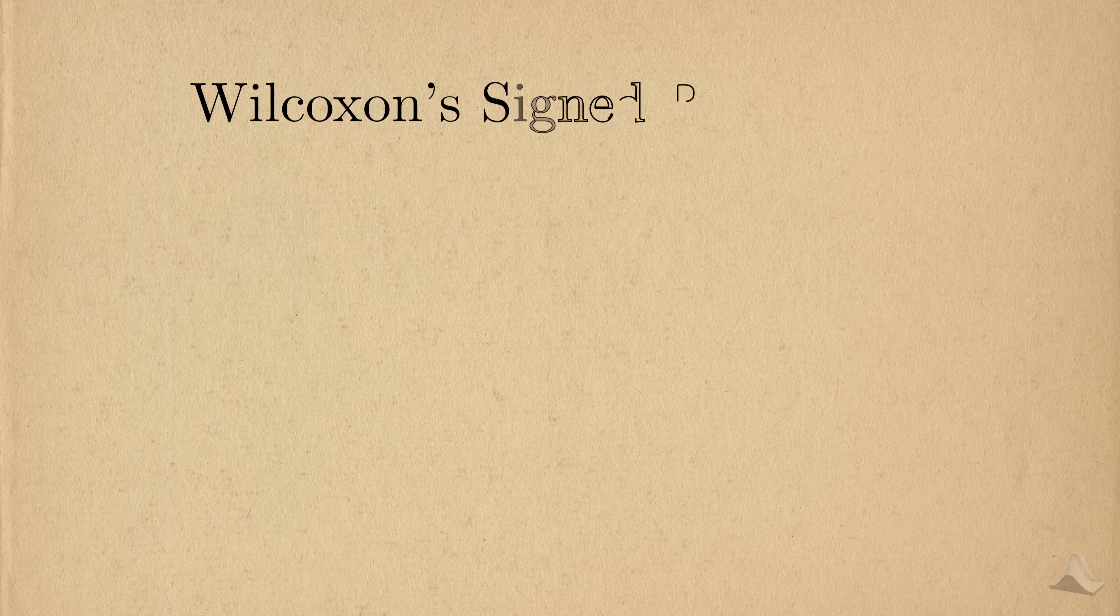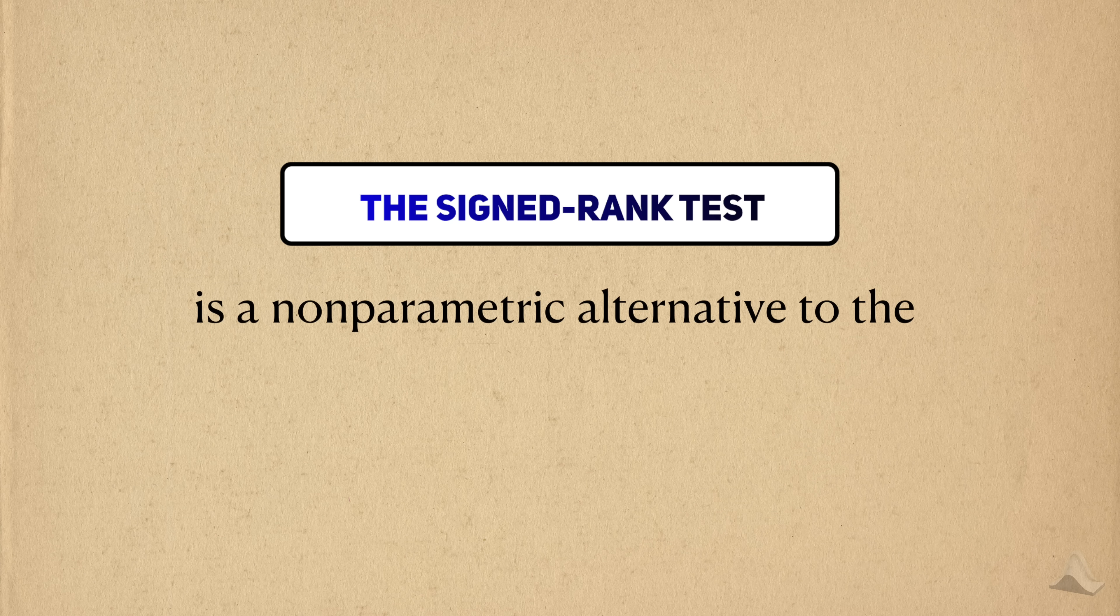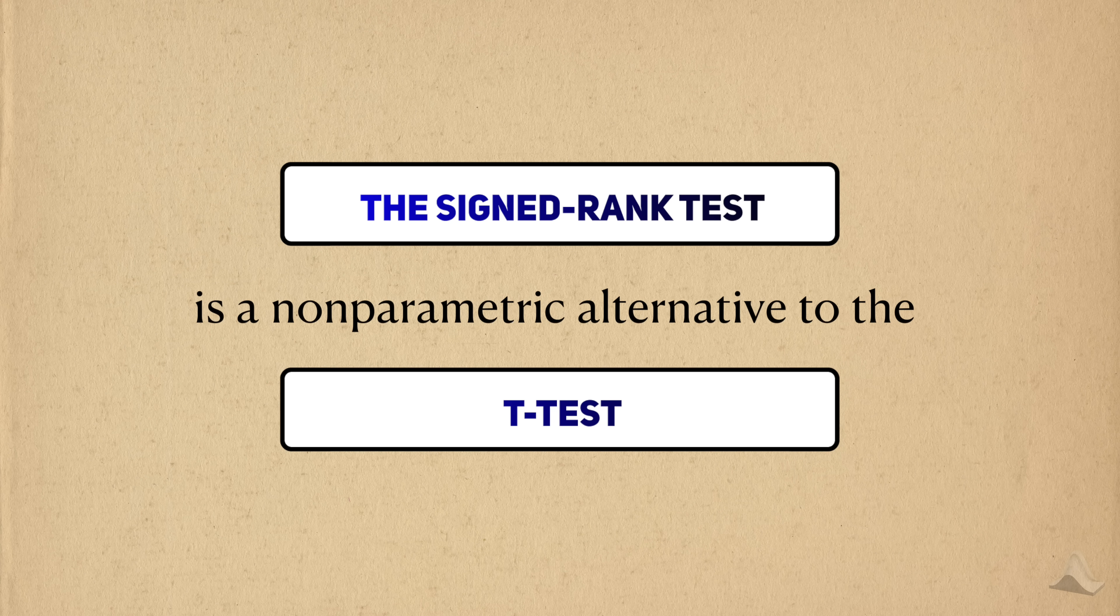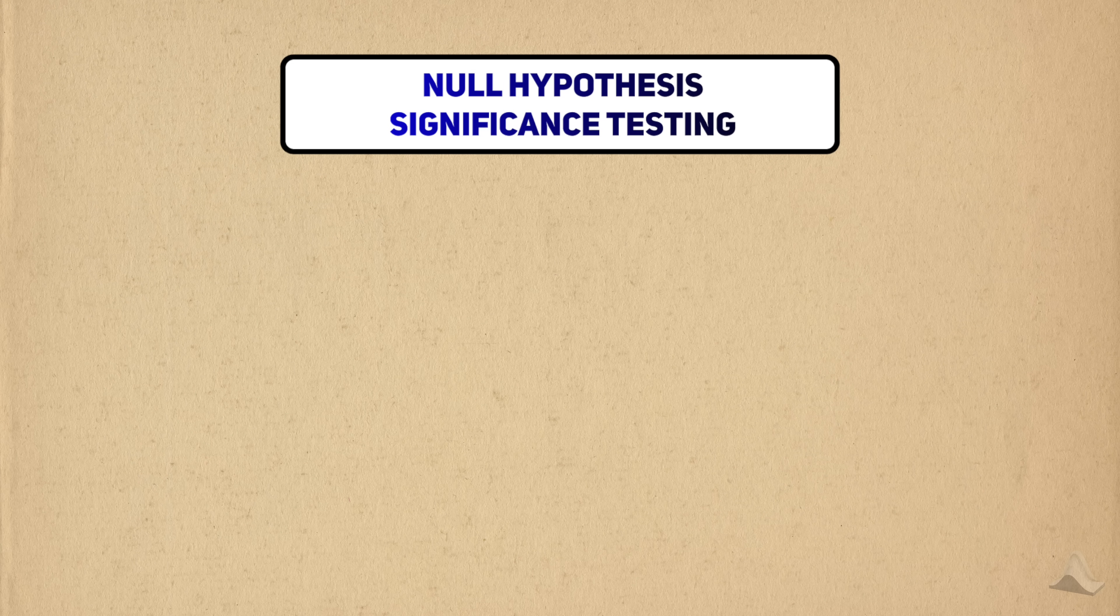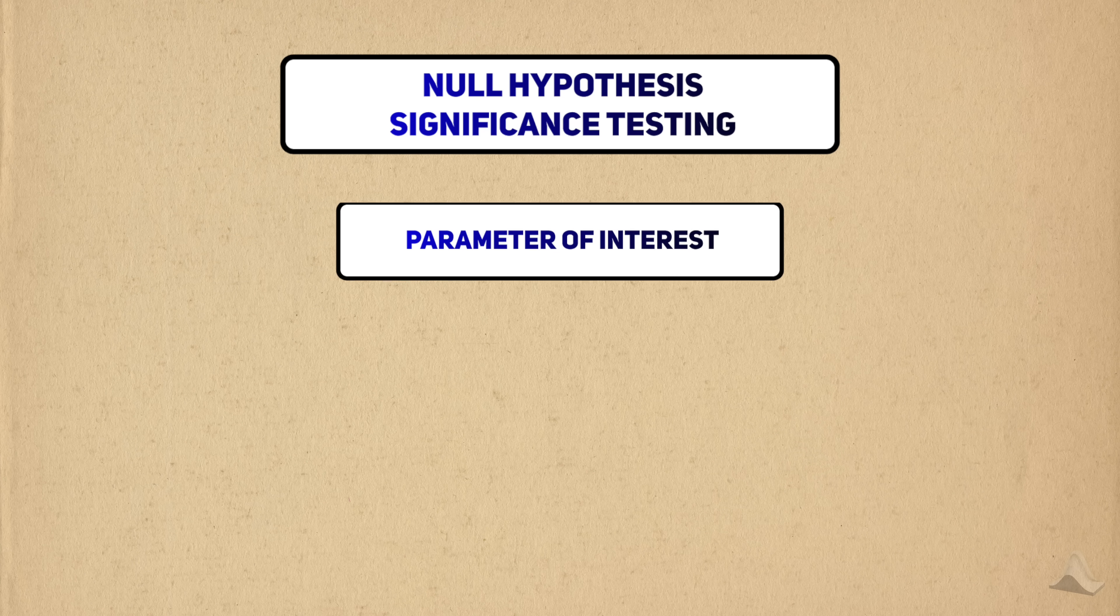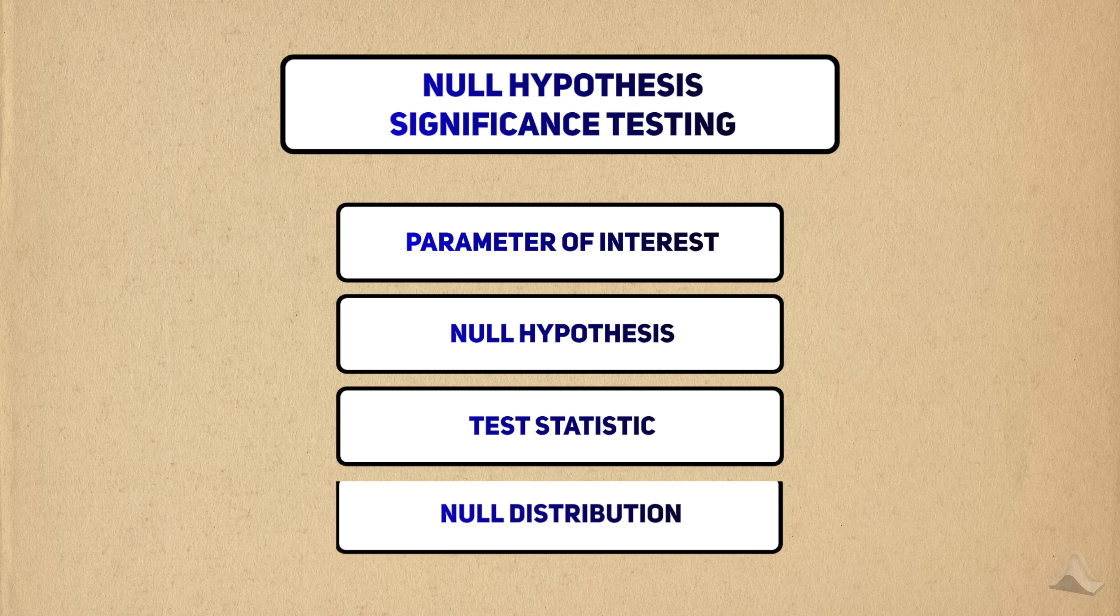The first non-parametric hypothesis test we'll look at is Wilcoxon's signed rank test, named after the statistician Frank Wilcoxon. I'll be calling it the signed rank test for short. The signed rank test is a non-parametric alternative to the one-sample t-test. Since it's a hypothesis test, we're going to view it in terms of the elements of the null hypothesis significance testing framework, or NHST. We're going to see what the parameter of interest is, the null hypothesis, the test statistic, and the distribution of the statistic under the null hypothesis.